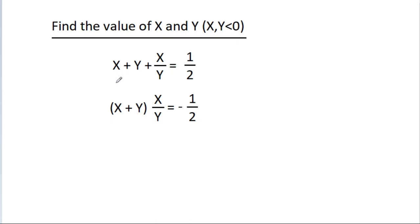In this video, we have given that x minus y minus x by y is equal to 1 by 2. And x minus y times x by y is equal to minus 1 by 2. Then we have to find the value of x and y, given that x, y less than 0.